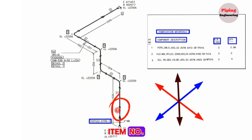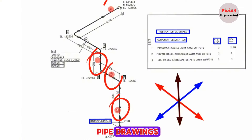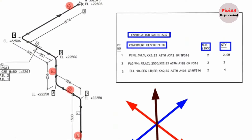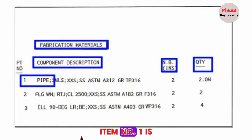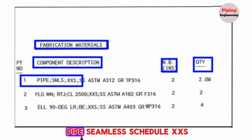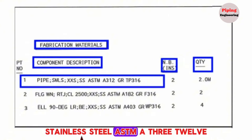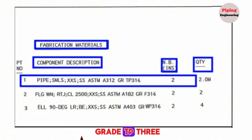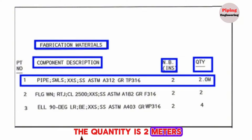Item number 1 is shown in several places on the pipe drawings. Looking at the fabrication materials list, item number 1 is Pipe, Seamless, Schedule XXS, Stainless Steel ASTM A312, Grade TP316, size 2 inches, and the quantity is 2 meters.